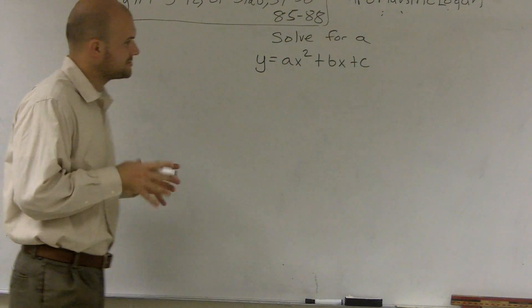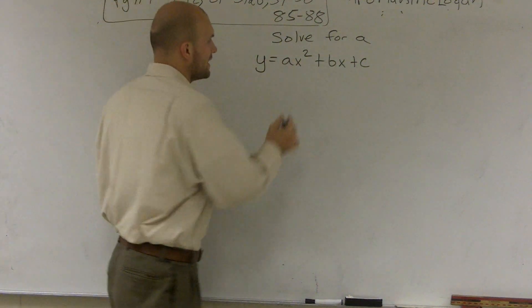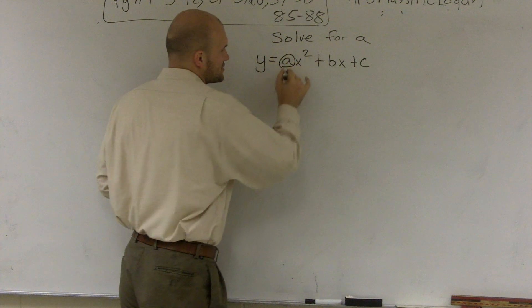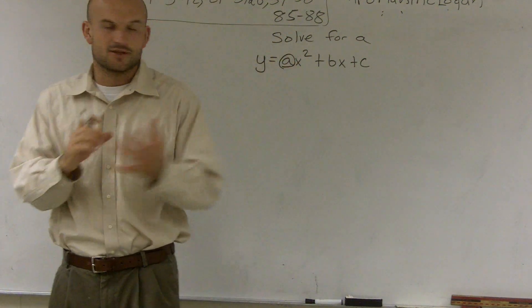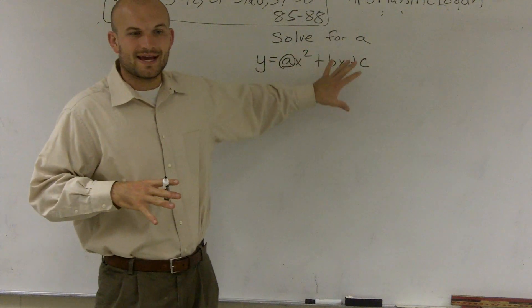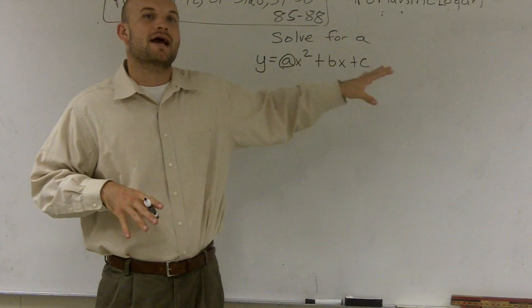Well, what we can kind of do is, if we look at our a, and a lot of times what I like to do is kind of circle it. Because when I'm circling it, what I'm doing is I'm saying I'm pinning it to the board. I am not going to move a. I'm going to undo everything that's happening to the a.